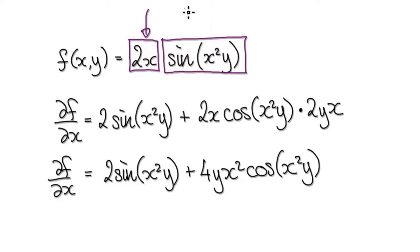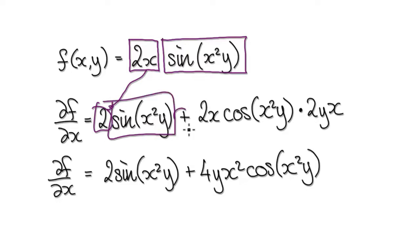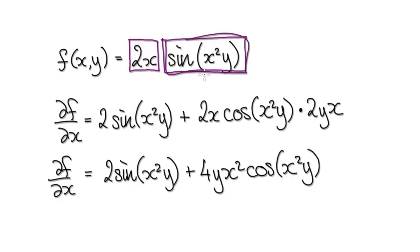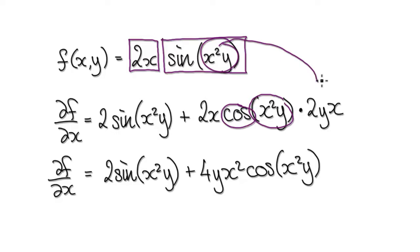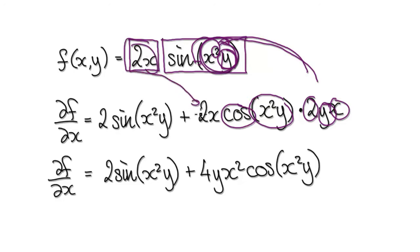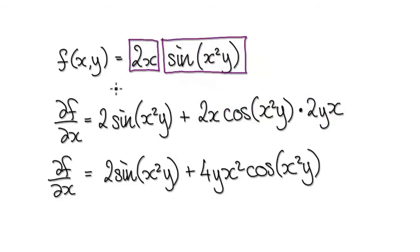The product rule is: differentiate the first, leave the second alone. So differentiating the first will give you 2. Leave the second block alone, and then plus — differentiate the second and leave the first alone. When you differentiate sine of the bubble, it would be cos of the bubble, then times the derivative of the bubble itself. x is the variable, y is a constant. So when you differentiate the bubble itself, the 2 will come down, giving you 2x, and then you times the constant y. Don't forget the product rule says leave the first alone. If you tidy this up, it would then become this.